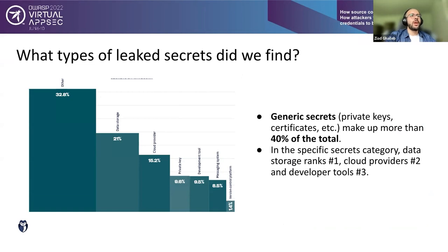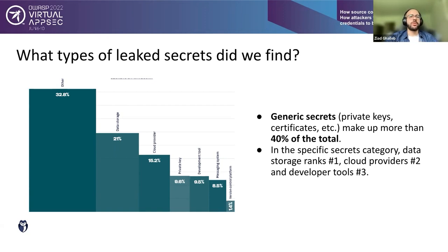Looking at the types of secrets found: generic secrets such as private keys and certificates make up more than 40% of the total, while specific secrets make up the remaining 60%. Within specific secrets, data storage credentials rank first, cloud provider keys — AWS, Google Cloud, Alibaba — came in second, and developer tools used to build and test software came in third.